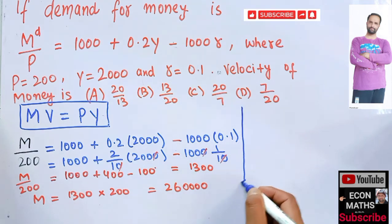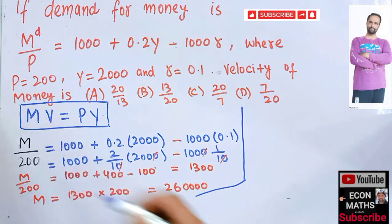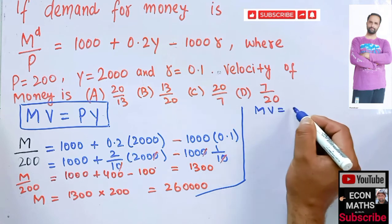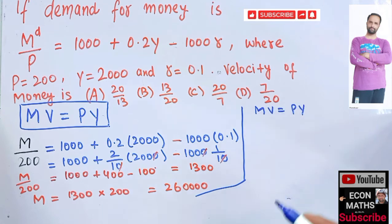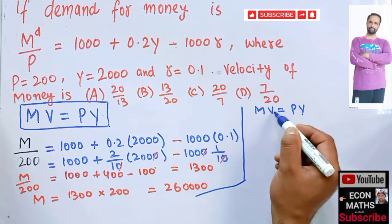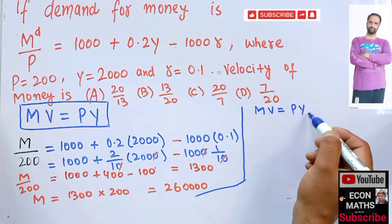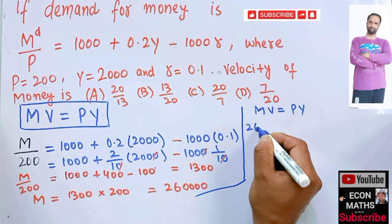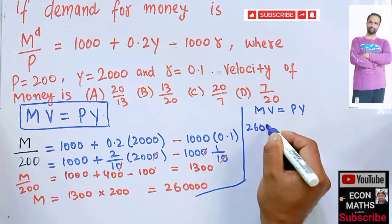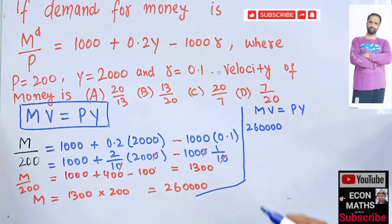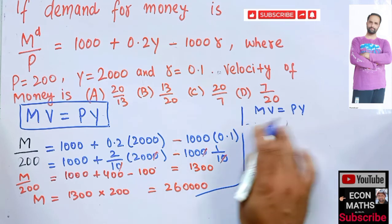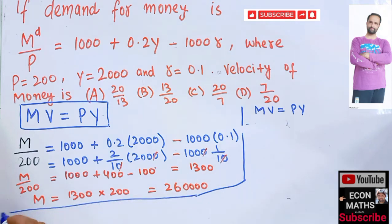Now we have all the values here. So our M is this, using this MV = PY, this equation tells us this is our total expenditure and this denotes our nominal GDP. Now money supply is 260,000.